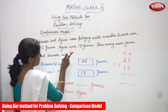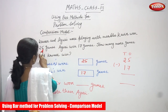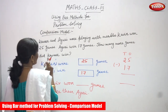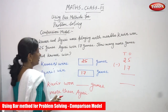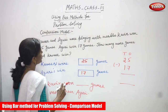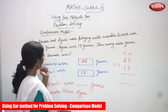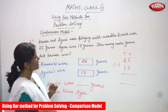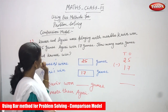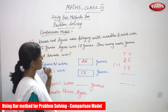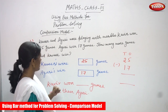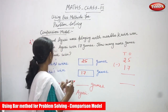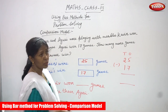The question is: Kaveer and Ayuri were playing with marbles. Kaveer won 25 games and Ayuri won 17 games. How many more games did Kaveer win? Both are playing with marbles — Kaveer won 25 games and Ayuri won 17 games.